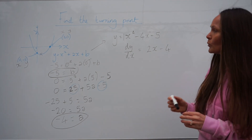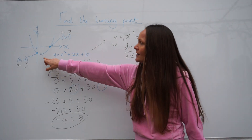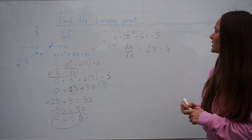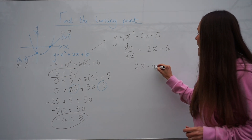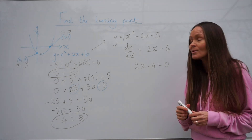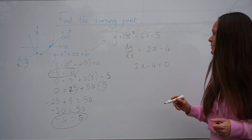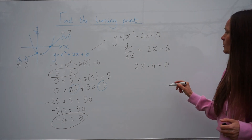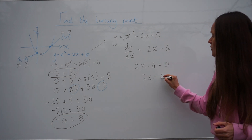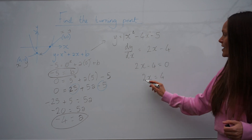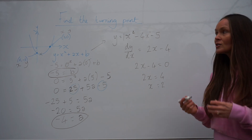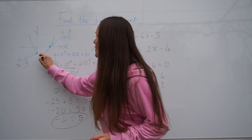To work out the coordinates, remember the gradient is equal to 0 at the turning point. We set this gradient expression equal to 0 and solve for x — that gives us the x-coordinate of the turning point. Move the negative 4 over to the other side so that 2x equals 4, then divide both sides by 2, giving x equals 2. So we've got the x-coordinate of our turning point.